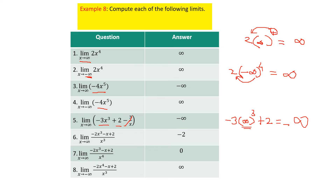For questions 6, 7, and 8 we apply the principle of dominance. In question 6, the highest degree in the numerator is 3 and in the denominator is also 3. Since both are equal, the limit equals a over b. Here a equals the leading coefficient minus 2 and b equals 1, so the limit is minus 2 divided by 1, which equals minus 2. In question 7, the numerator degree is 3 and denominator degree is 4; since the numerator degree is less, the limit equals 0.